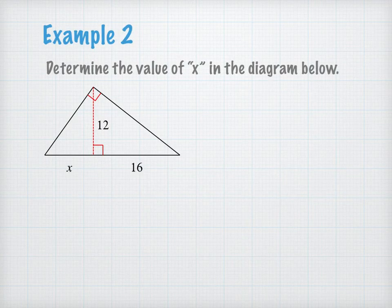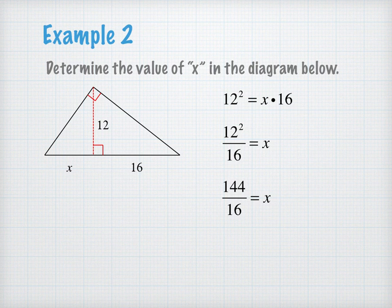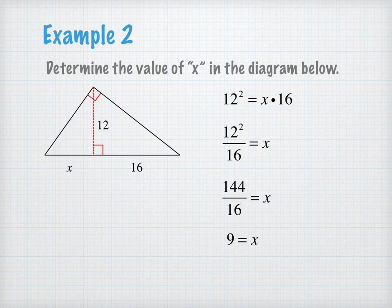We'll do another example, but this time the altitude is given and one of the segment lengths is unknown. We start the same way: 12 squared equals x times 16. The altitude squared equals the product of the two segments of the hypotenuse. To solve for x, divide by 16. 12 squared is 144, and 144 divided by 16 is 9. So the small piece of the hypotenuse is 9, and the bigger segment is 16. This makes sense — 12 is the geometric mean of 9 and 16, and 12 is somewhere between 9 and 16.